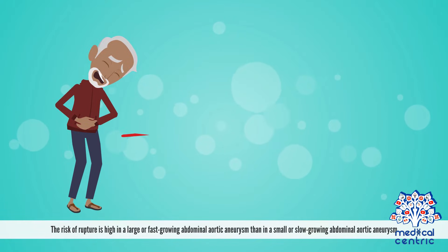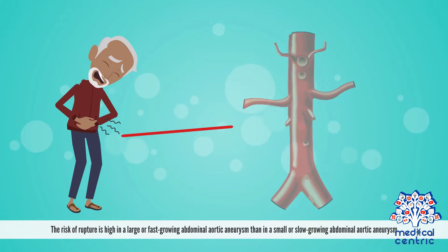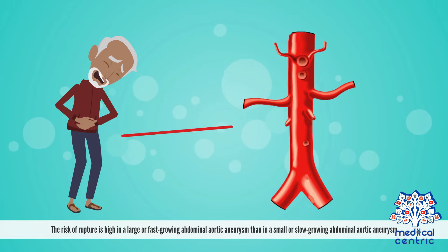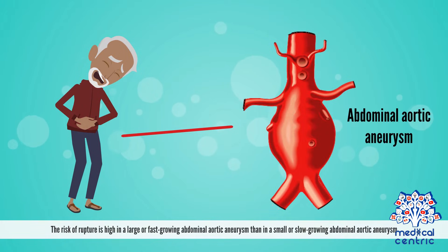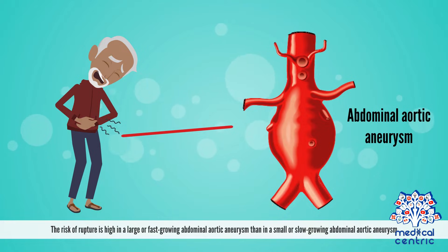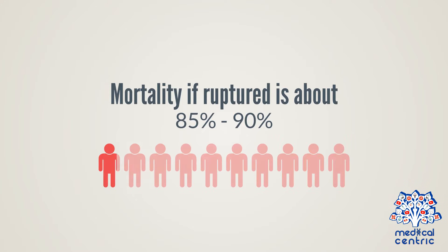The risk of rupture is high in a large or fast-growing abdominal aortic aneurysm than in a small or slow-growing abdominal aortic aneurysm. Mortality, if ruptured, is about 85% to 90%.